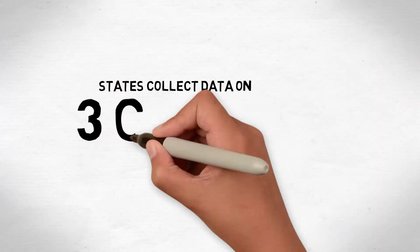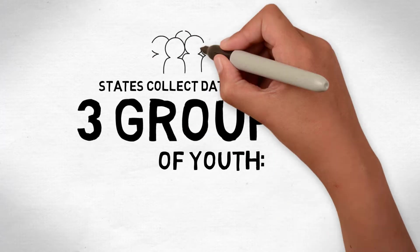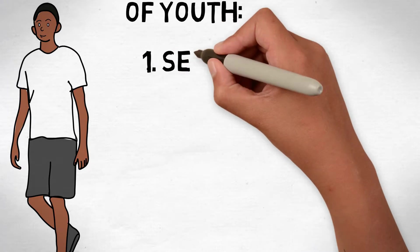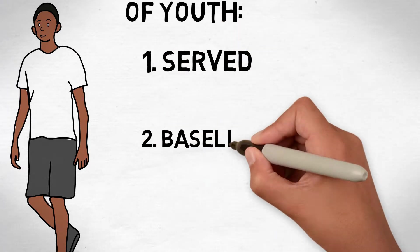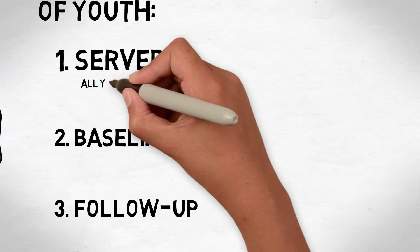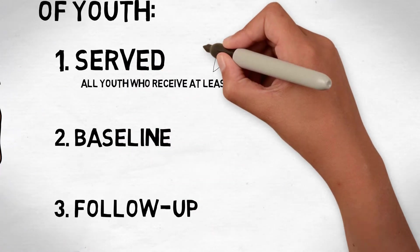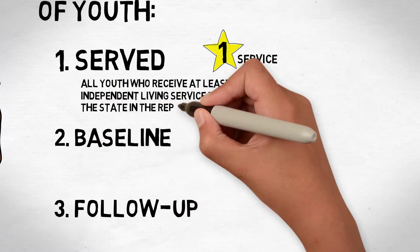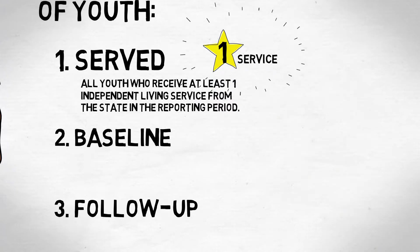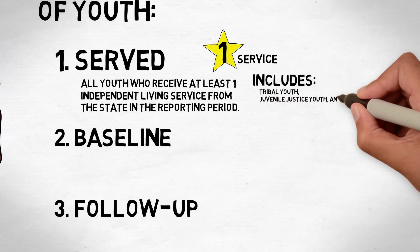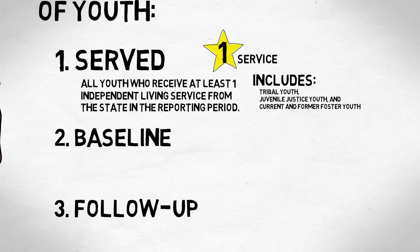States collect data on three groups of youth. These categories are the served population, the baseline population, and the follow-up population. The served population refers to all youth who receive at least one independent living service paid for or provided by the state agency in the reporting period. The served population includes tribal youth, juvenile justice youth, and current and former foster youth.